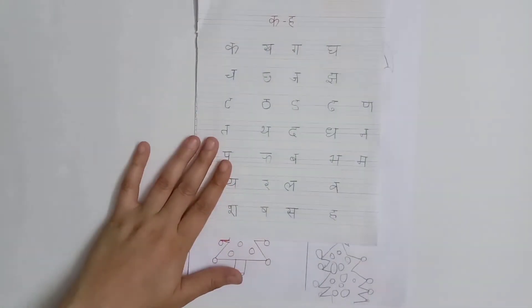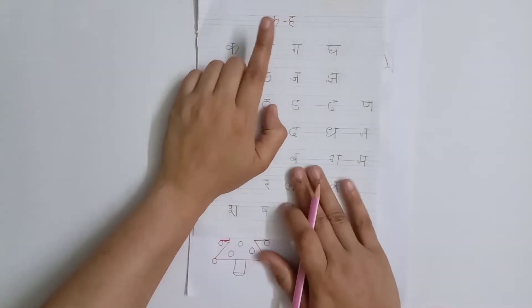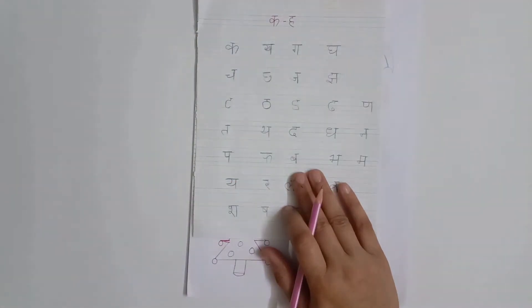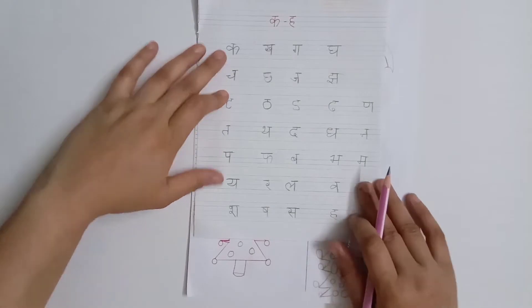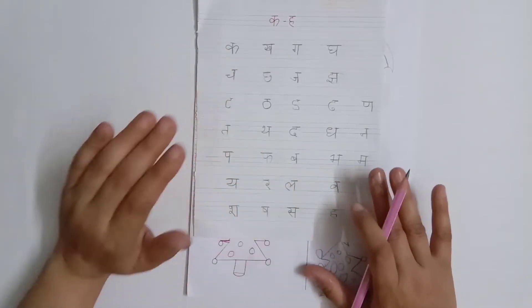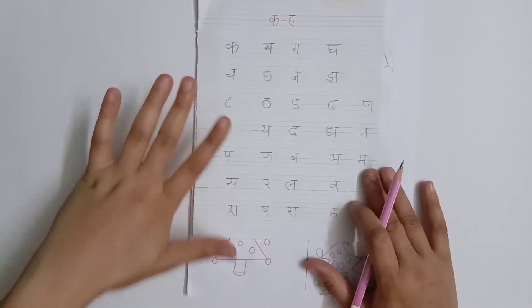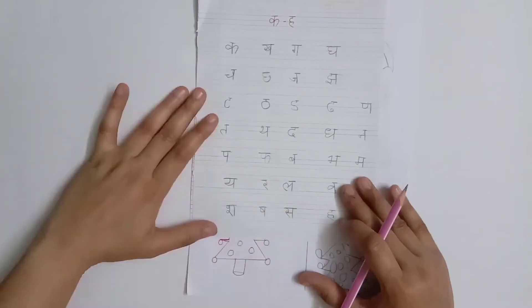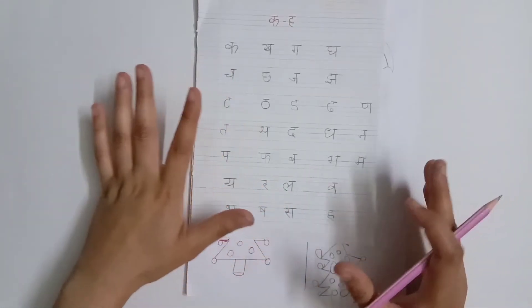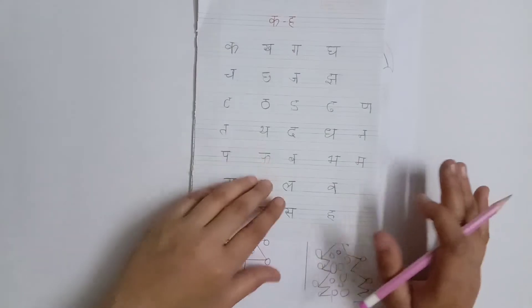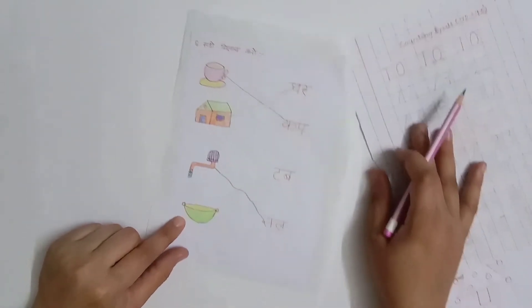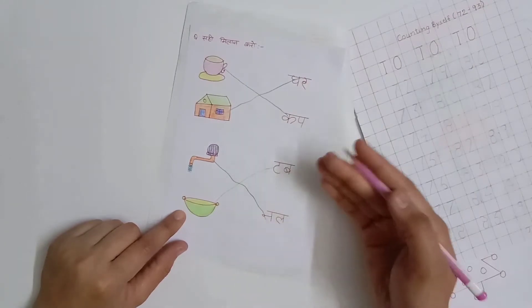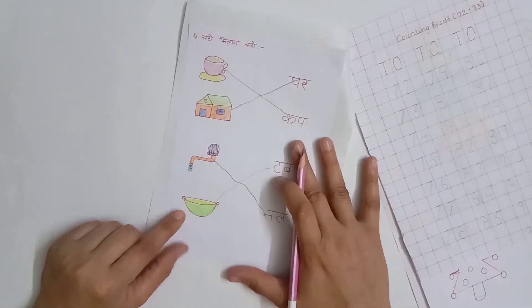Our first worksheet is kar to her. Here I have given Amish to write kar to her, and usually Amish writes kar to her independently. On a daily basis or maybe every other day, I give Amish these Hindi practice worksheets. After that, our next worksheet, again a Hindi worksheet - these days I am giving practice to my son of two and three letter words in Hindi.